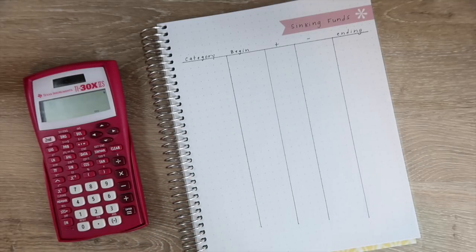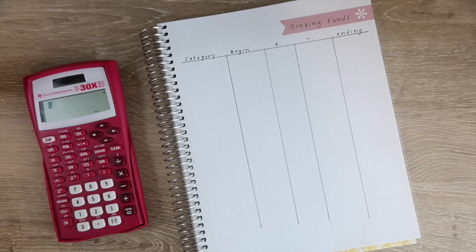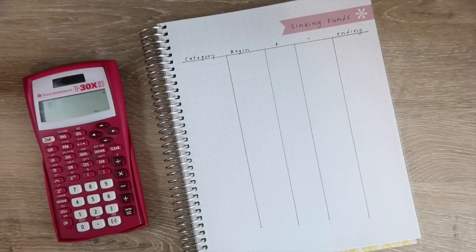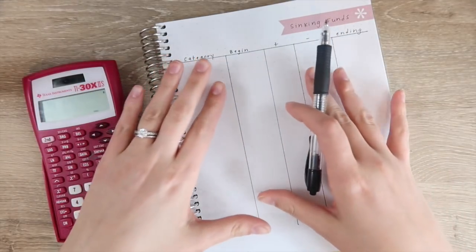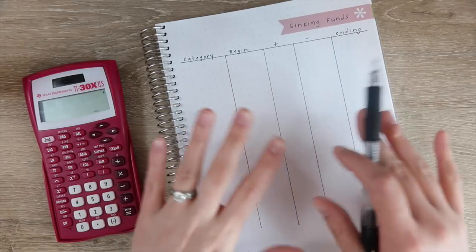When I began our sinking funds we started out pretty small and that's because we kind of had an end goal in mind, and you can start as many or as little as you want. You really just have to make it work for your family. So the first thing I want to talk about is the layout.